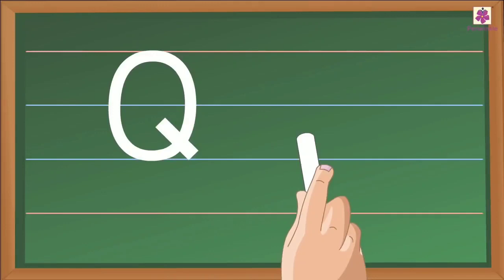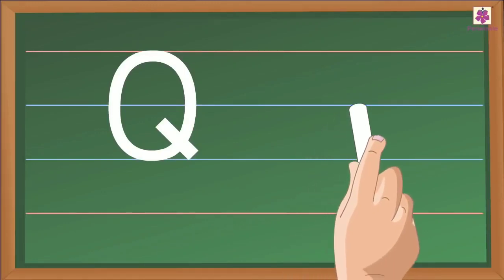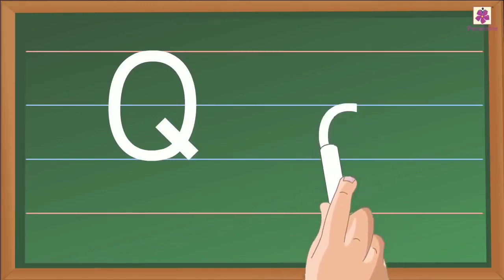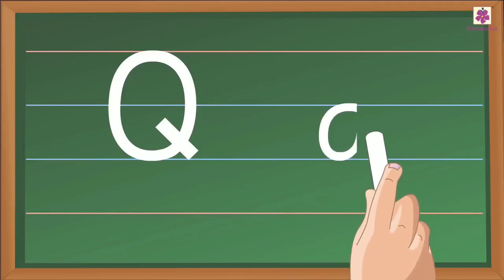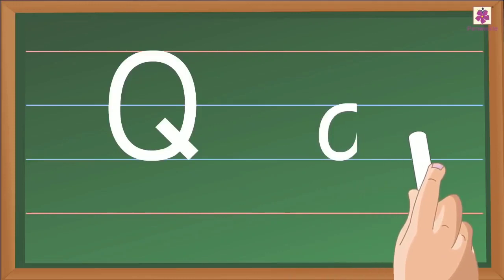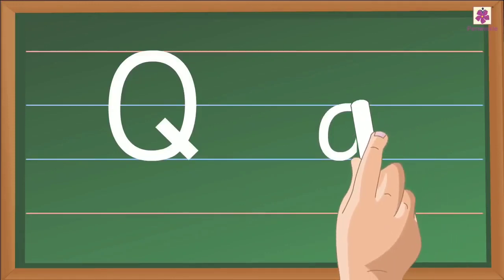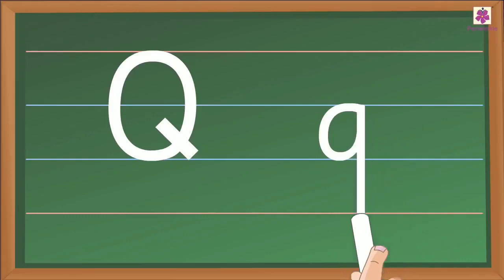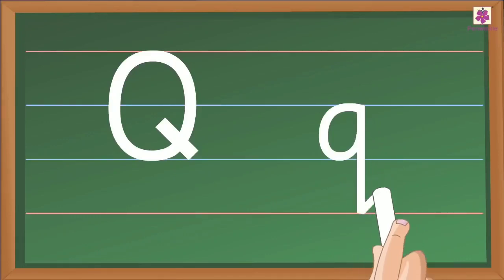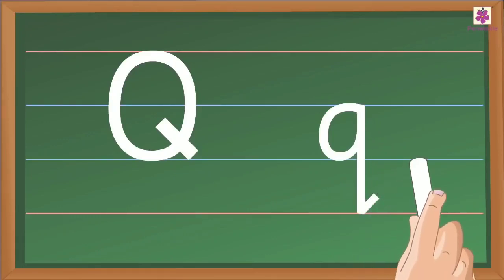Then small Q. Start from the middle and make a small C. Then go to the middle again and make a standing line and make a small slanting line. Small Q.